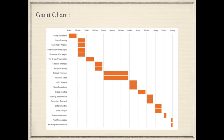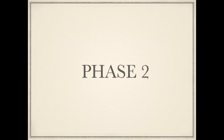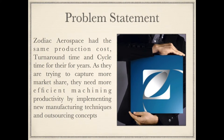The Gantt Chart outlines the project timeline. Phase 2 - Problem Statement: Zodiac Aerospace had the same production cost, turnaround time, and cycle time for years. As they were trying to capture more market share, they need more efficient machining productivity by implementing new manufacturing techniques and outsourcing concepts.